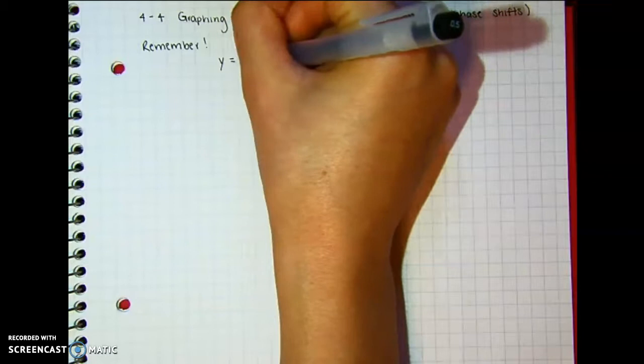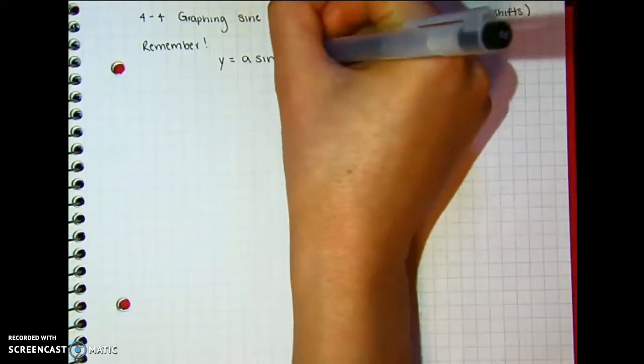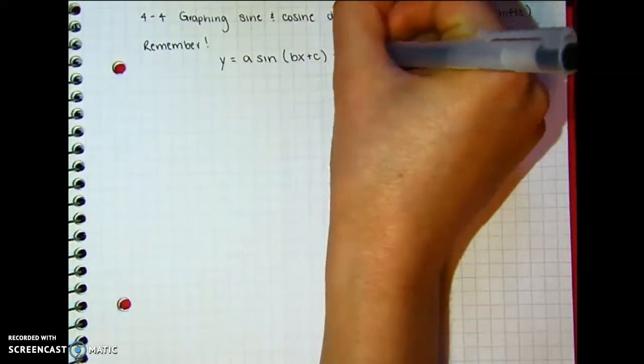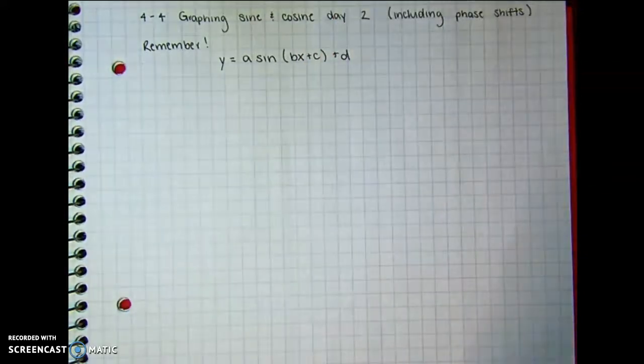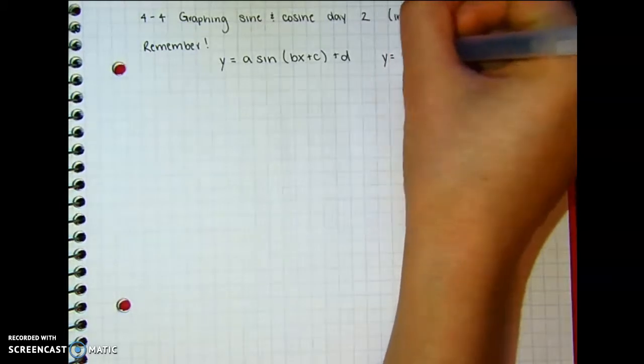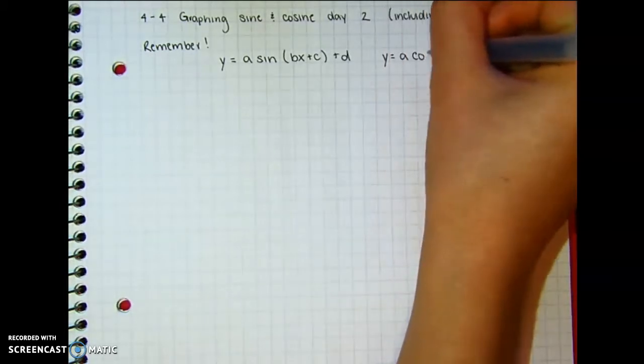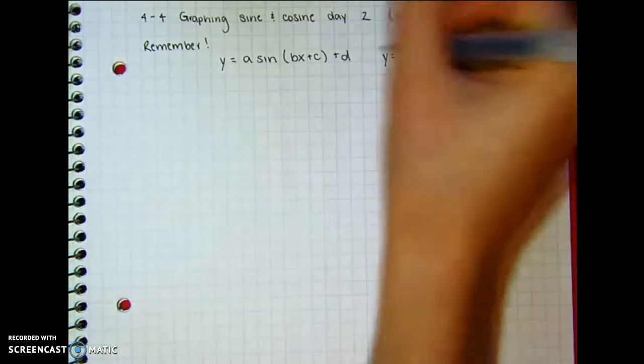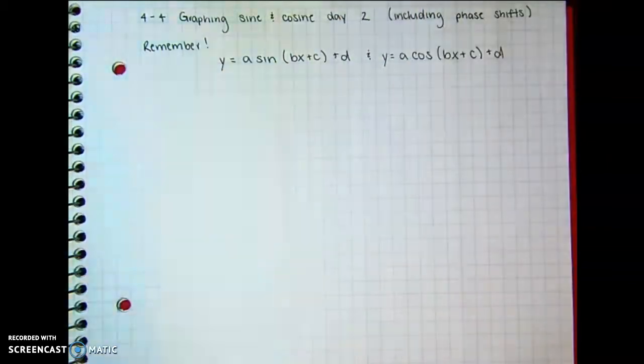So A sine of Bx plus C plus D. And for cosine, same idea, but y equals A cosine Bx plus C plus D.